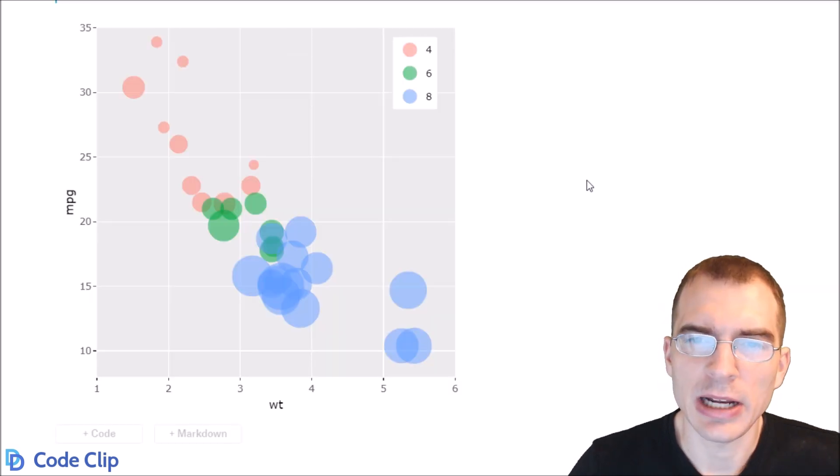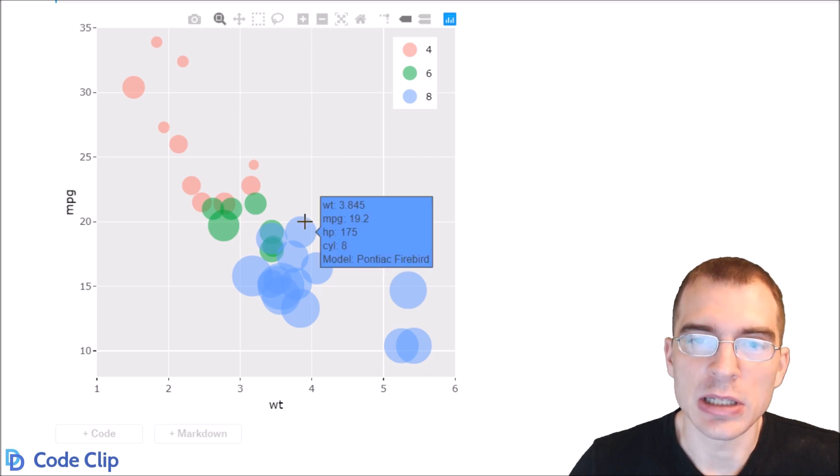The plotly plot adds some interactivity, so we could for instance hover over this point and see that this particular data point is the Pontiac Firebird, 8 cylinder car with 175 horsepower, and we can see the exact weight and mpg ratings for it.